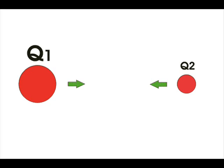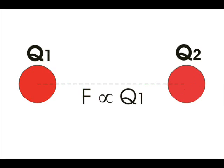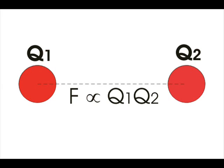According to Coulomb's law, force F between them is directly proportional to either Q1 or Q2. Or in other words, F is proportional to the product of Q1 and Q2.